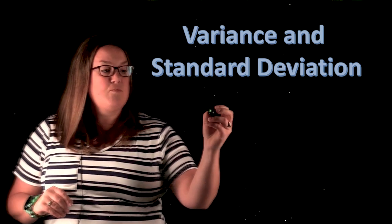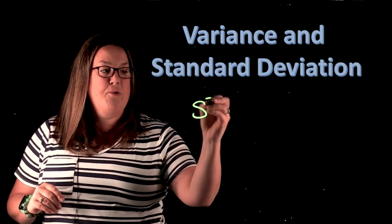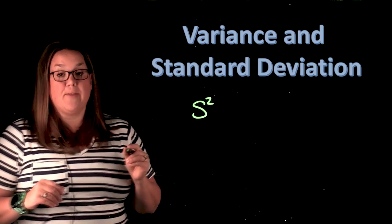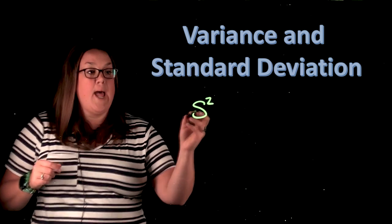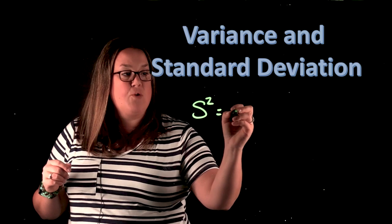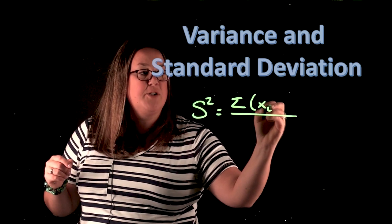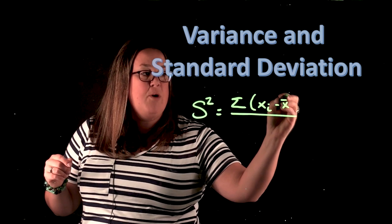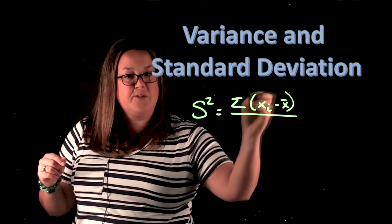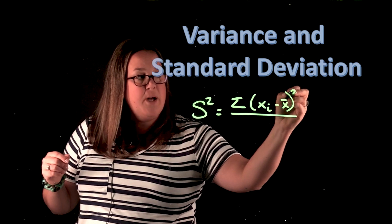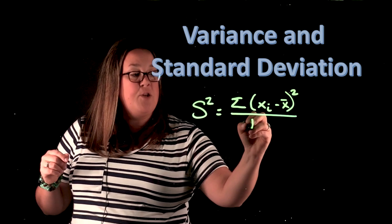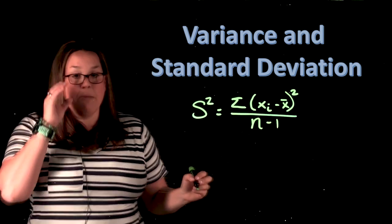So variance notation wise has the notation S squared. That's the notation for variance. And the formula for that is going to take the sum of all of the deviations. And if you remember, that's this formula right here. So the sum of all of those deviations, but you're going to square those and then you would divide by N minus one.